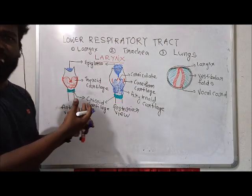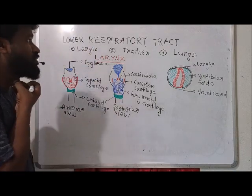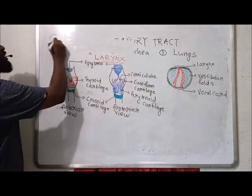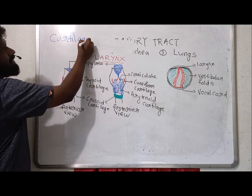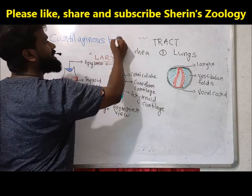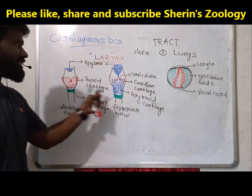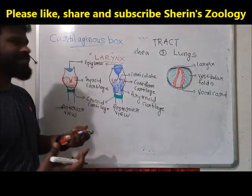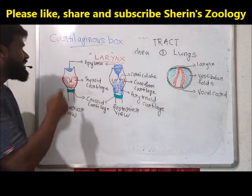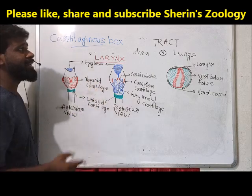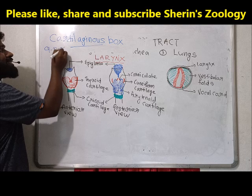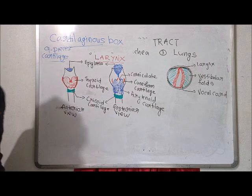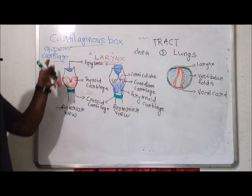The larynx is also known as the voice box or sound box. The larynx is a cartilaginous box, supported by nine pieces of cartilages. Because it is supported by nine pieces of cartilages, it is referred to as a cartilaginous box.